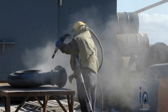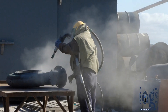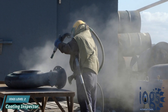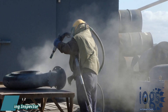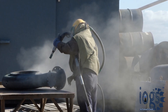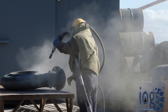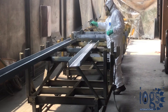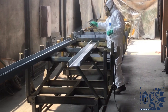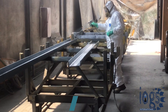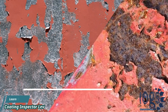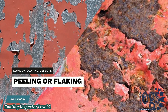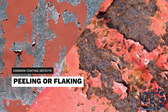During the preparation of a steel surface for coating, dust particles may accumulate on the surface, caused by blast cleaning or from the environment where preparing the surface took place. Applying a coating over dust can prevent adhesion, which will lead to peeling, flaking, or other unwanted issues.